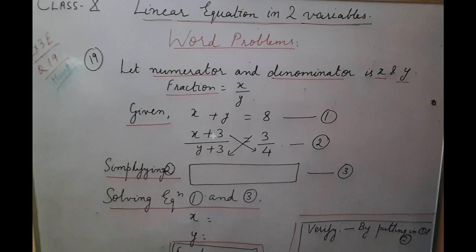For the second equation, if we add 3 to the numerator and 3 to the denominator, the fraction becomes 3/4. So when you simplify, you will get again a linear equation in two variables.